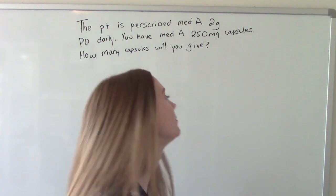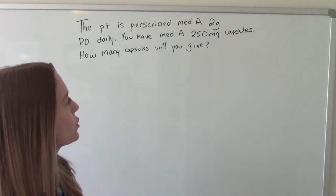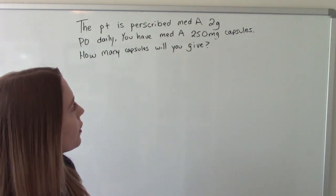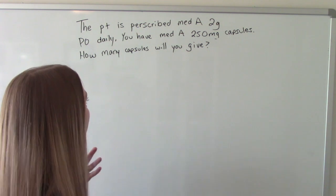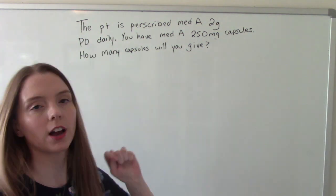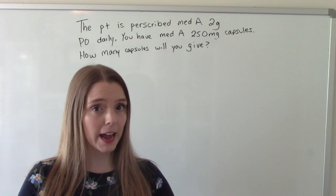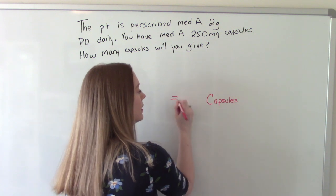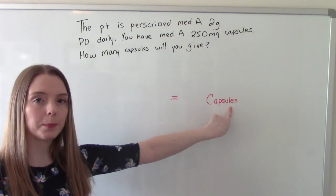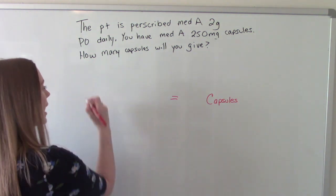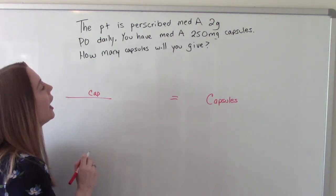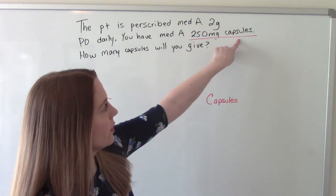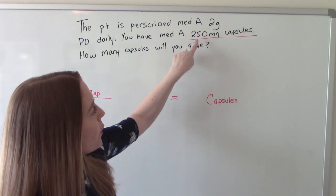Let's try our first problem. The patient is prescribed medication A 2 grams PO daily. You have medication A 250 milligram capsules and they want to know how many capsules are you going to give. So we're looking for capsules. Capsules will go in our answer and if it's going to be in our answer it's going to be in our numerator, our top number. And where do we see it in the problem? Here.